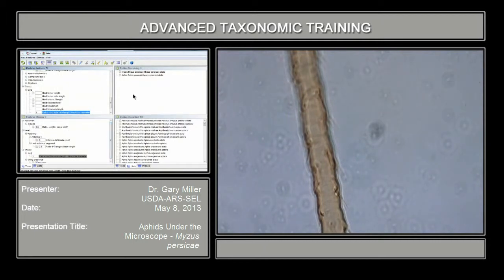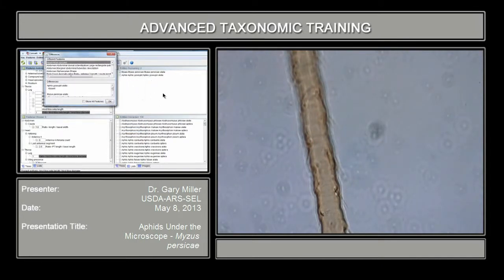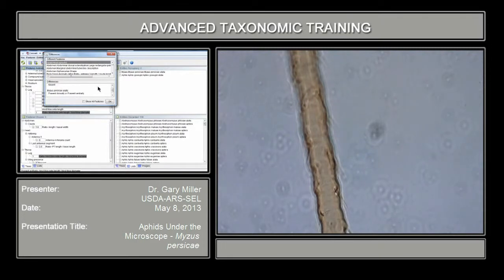So now we're down to two taxa left: Myzus persicae and Aphis gossypii. If you check the differences, it'll tell you the differences between Myzus persicae alates and Aphis gossypii alates. What it's saying is that head spicules for Aphis gossypii are absent, but in Myzus persicae they're going to be present dorsally or present ventrally. So that's the main character to determine those two species.